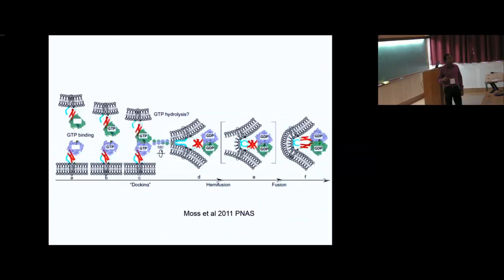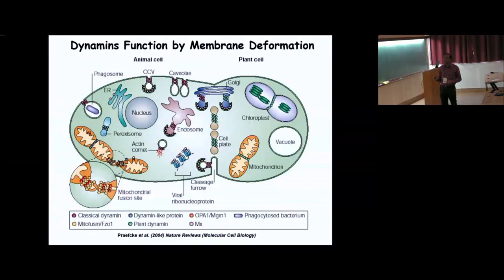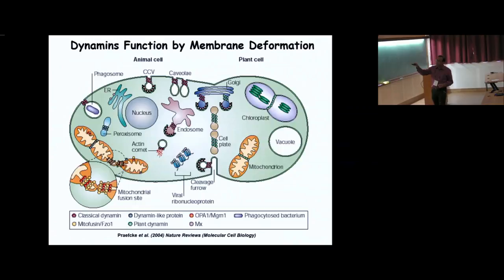Dynamins have diversified roles. Two already discussed are: during endocytosis, forming the clathrin-coated vesicles and pinching off from the neck; and mitochondrial fission, where a ring forms and its constriction causes fission. Also mitochondrial fusion, where juxtaposition of two mitochondria leads to curvature change in the fusion region — MGM1 in yeast brings them together for outer membrane fusion, and another dynamin handles inner membrane fusion. Dynamins are also involved in peroxisome fission and chloroplast fission.